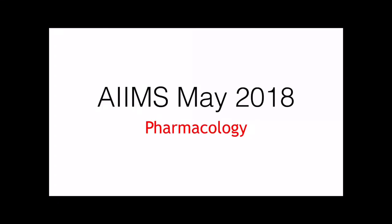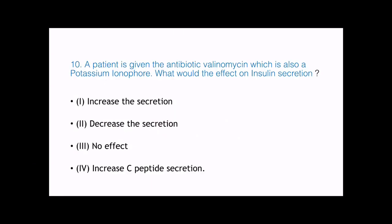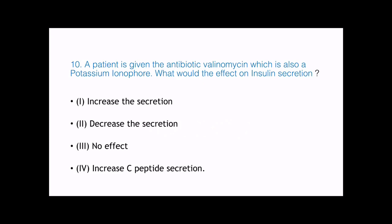Let's begin our discussion of a pharmacology question asked in the AIIMS May 2018 exam. This is the 10th question I'll be discussing and it's the 9th video. The question states: a patient has been given the antibiotic valinomycin, which is also a potassium ionophore. What would be the effect on insulin secretion?